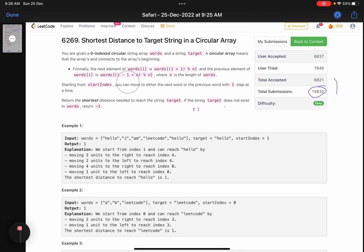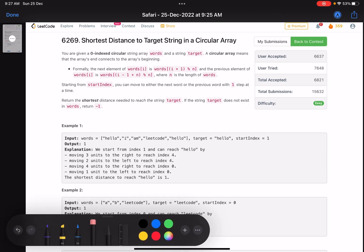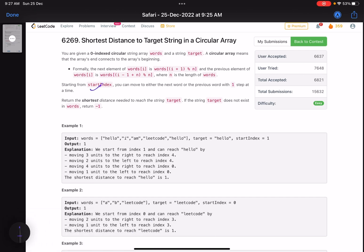The problem says starting from the start index, you can move to either the next word or the previous word with one step at a time. Return the shortest distance needed to reach the string target. If the string target does not exist in words, return minus one. So these are the words, the target string is hello, and I need to move from index one.